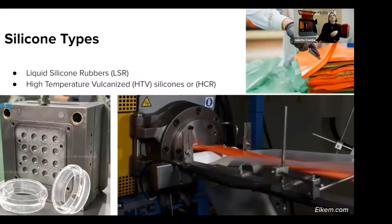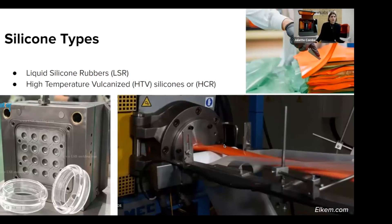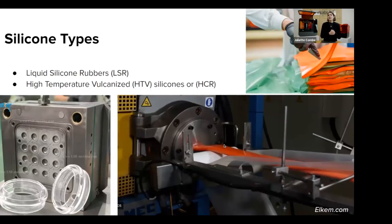Another type of silicone — you can see it on the left — is high temperature vulcanized, or HTV silicones, also sometimes called heat cured rubber, HCR. Those are more solid silicones with great properties in terms of temperature resistance and aging, and they are often used in cables and insulators. They are processed with a variety of manufacturing methods, very often extrusion or compression molding.